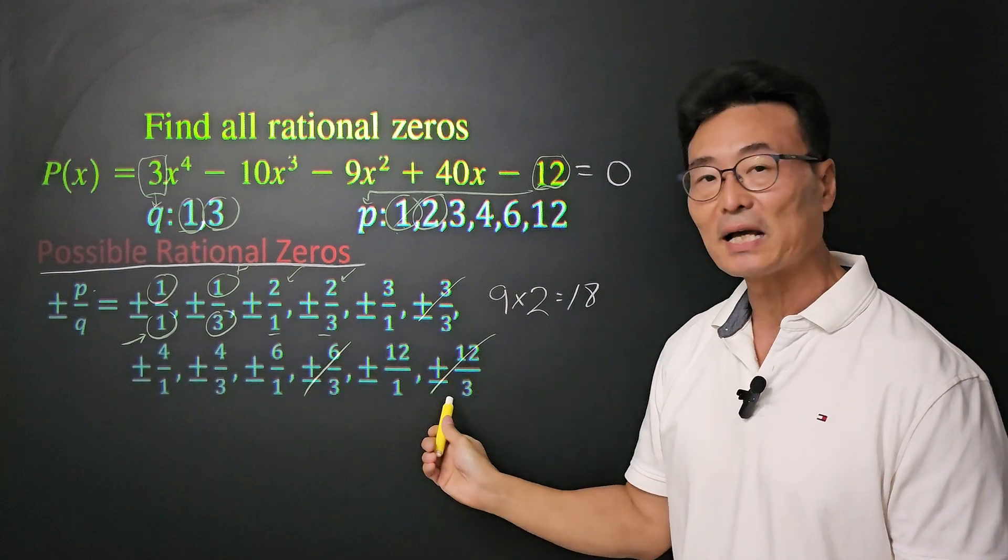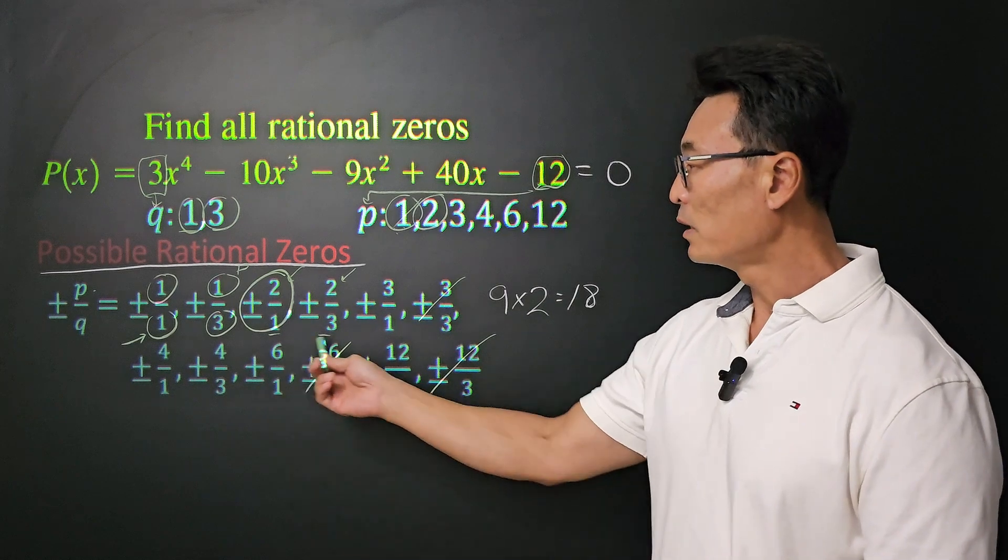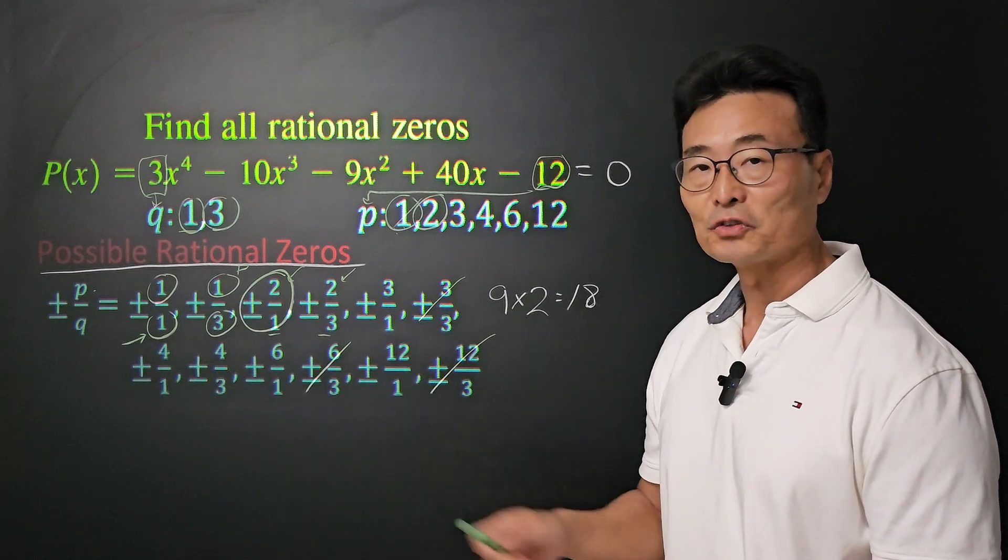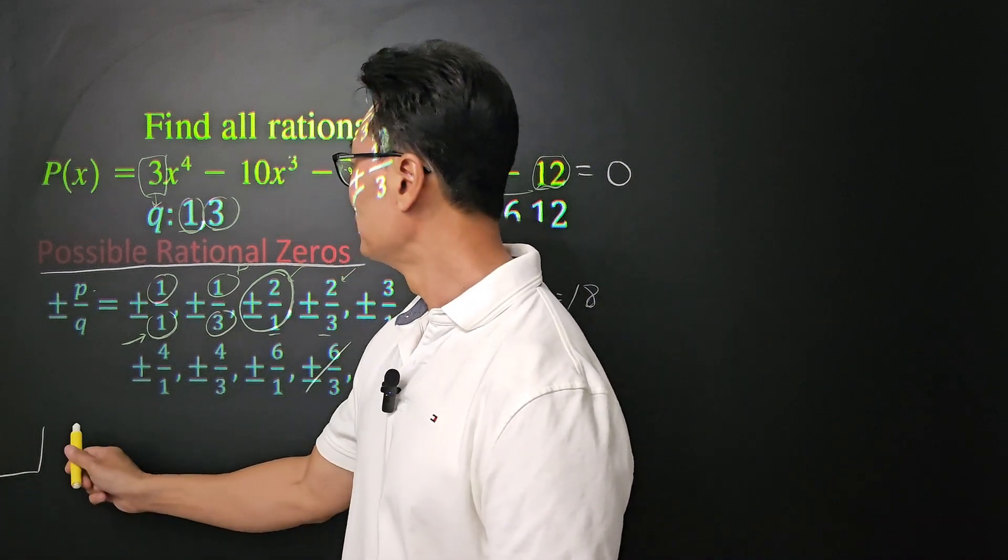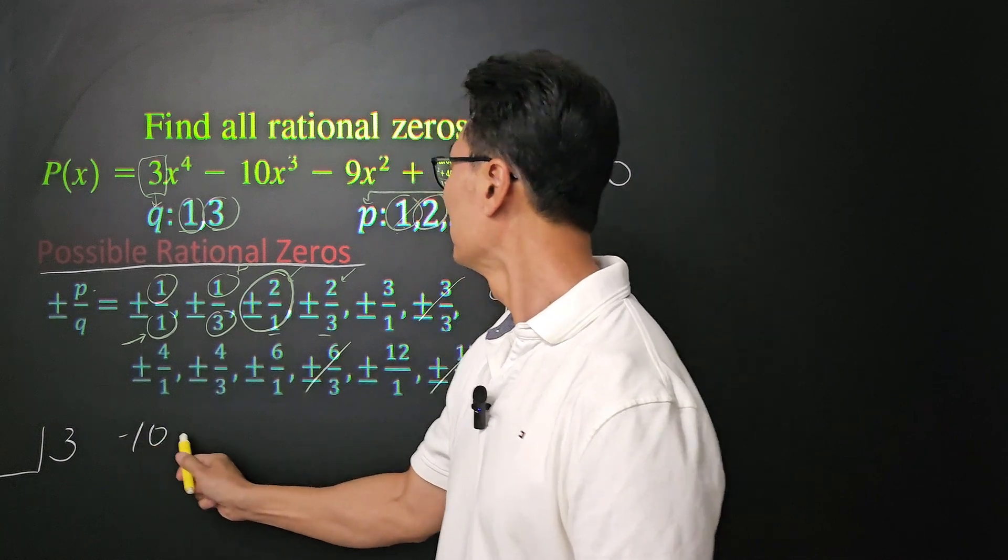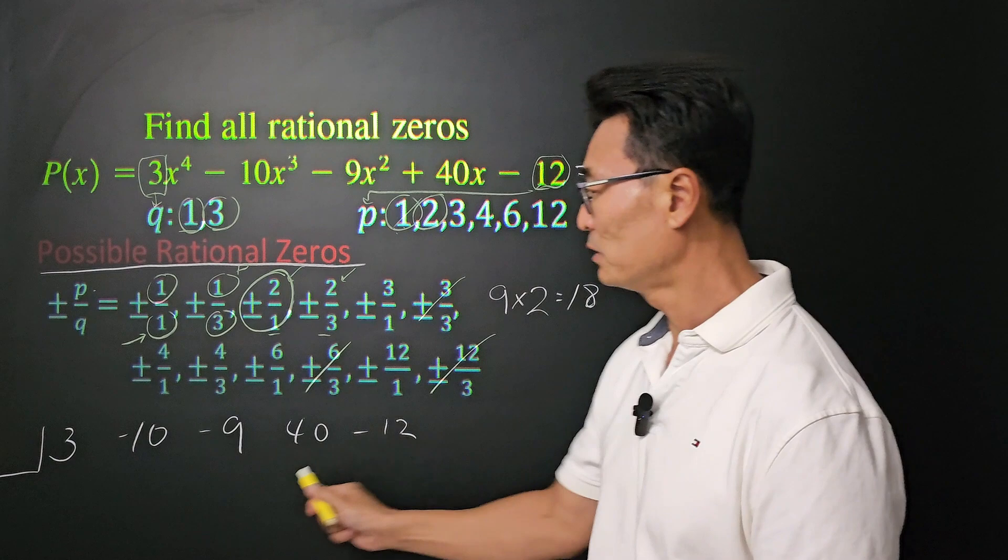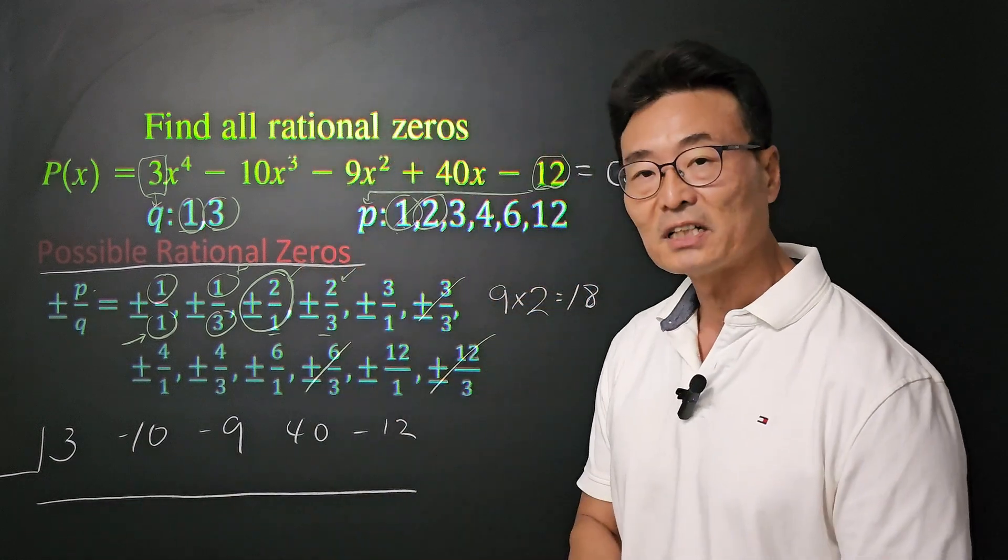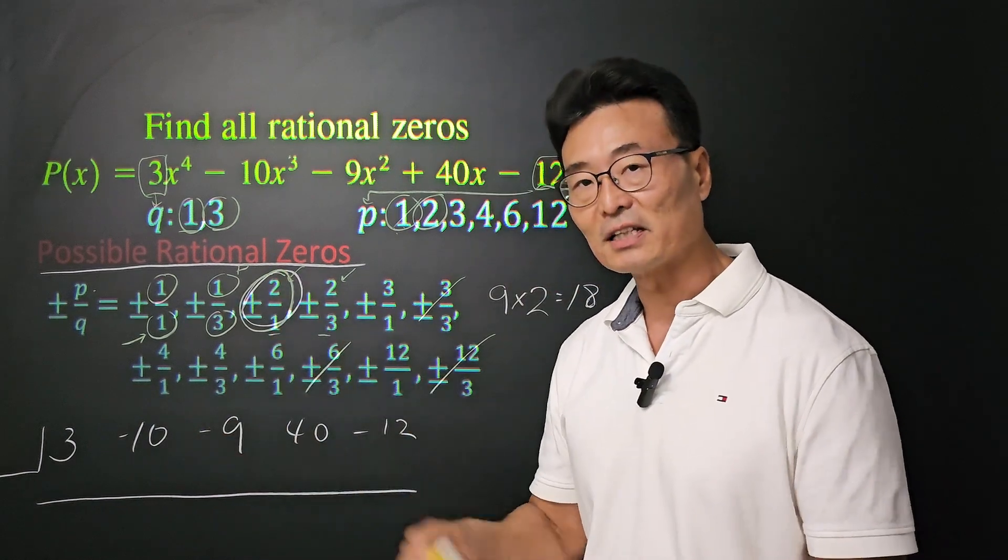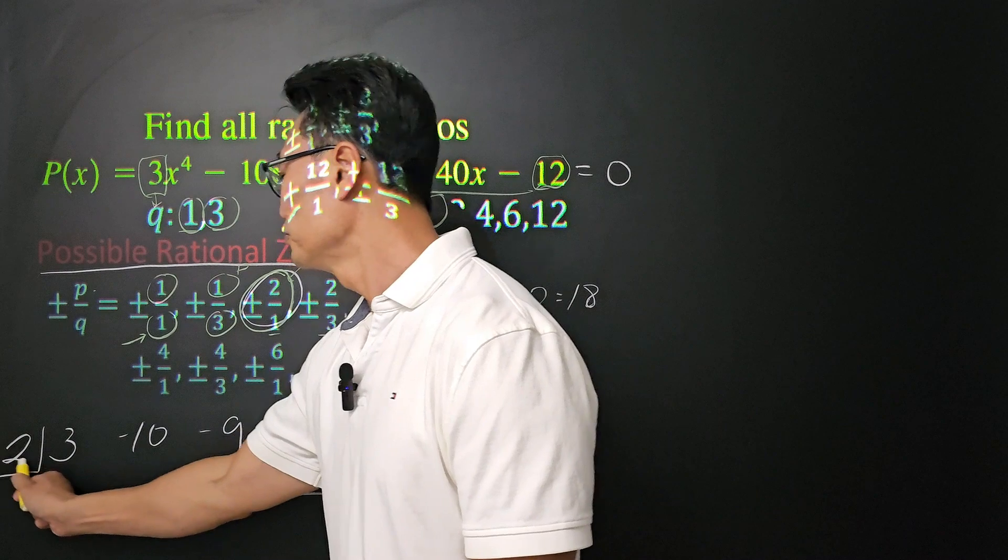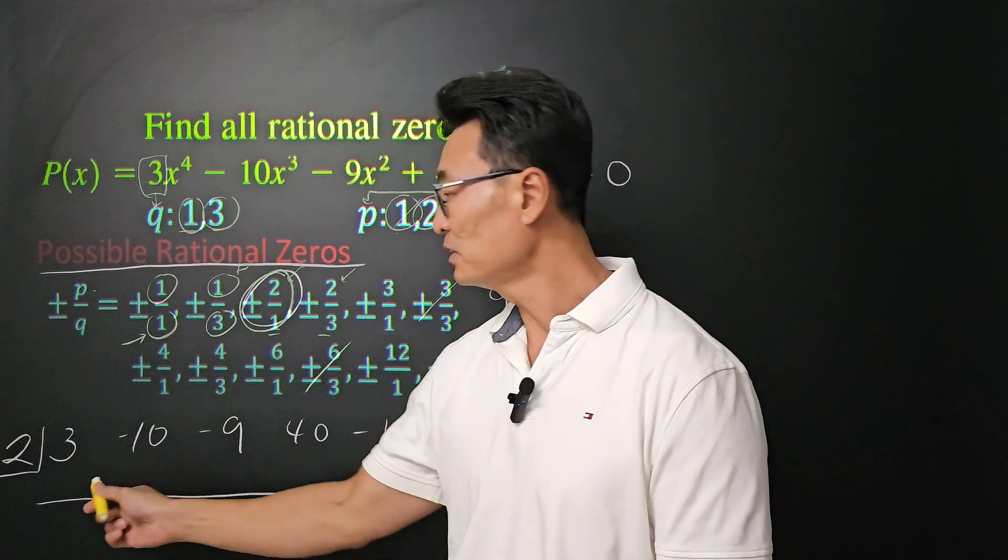Then, of the 18 values that we have, 1 or more will actually equal to x. Since we know that one of these numbers are equal to x, we're going to be using the synthetic division to find out which one. So, we got 3, negative 10, negative 9, 40, and negative 12. And with the synthetic division, I'm going to start with the value of 2 as a guess. Let's say if 2 is one of the zeros for the function. Synthetic division, here we go.